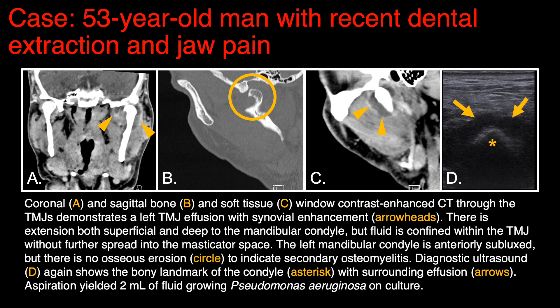Here's another case — a 53-year-old man who had a recent dental extraction and presented with subsequent jaw pain. In image A, we can see a coronal contrast-enhanced CT view demonstrating a left-sided temporomandibular joint effusion with synovial thickening and enhancement. Image B shows bone windows in the sagittal plane with no bone erosion or other evidence of bone involvement. The sagittal plane soft tissue windows again show the low-density joint effusion with thickening and enhancement of the joint synovium. On ultrasound, similar to the first case, the mandibular condyle is identified with a surrounding hypoechoic effusion. Aspiration yielded 2 milliliters of fluid, which was positive for Pseudomonas aeruginosa on culture.